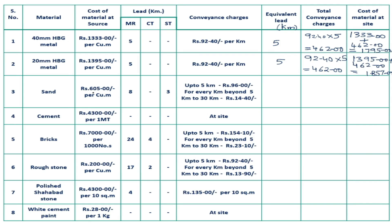Sand: its cost at source is 605 rupees. It is taken by metal road and also by a sandy track road. For a sandy track, increase the lead by 40%, so the factor is 1.4. The equivalent lead is: metal road distance 8 km plus sandy track 3 km into 1.4, which equals 8 plus 4.2 = 12.2 km.